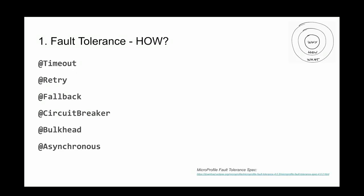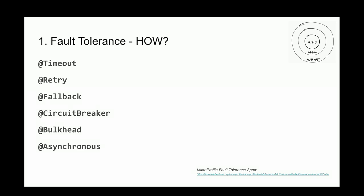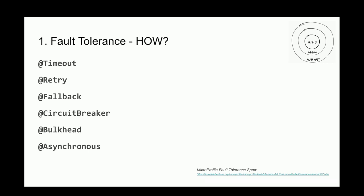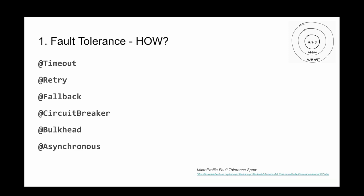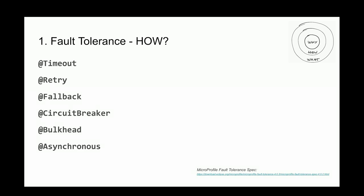The way you handle fault tolerance in MicroProfile is using annotations. If you're used to the Jakarta EE annotation style, you're still there. Things like timeouts — you send a request and force it to die after a specific time limit if there's no response. Retries — how many retries you should do. Fallback — if it fails, what do you do? Call another method, for example. I'll show you code in a moment.